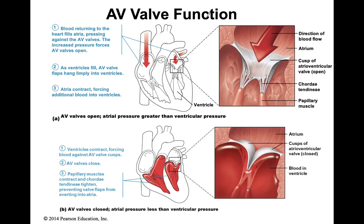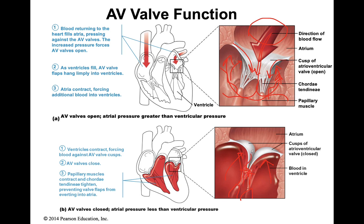Once blood generates high enough pressure in the atrium, that high pressure blood is going to push the AV valve open — almost like one-way western doors. Blood starts filling the ventricles, and as it starts filling, it's going to start putting pressure onto the back of the valves until it pushes them shut. At the same time, the papillary muscles contract and pull on the chordae tendineae to shut those doors, so blood cannot flow back into the atrium.